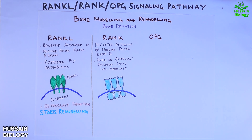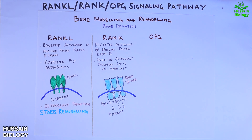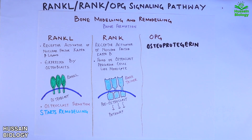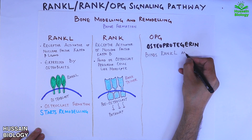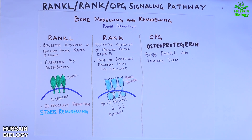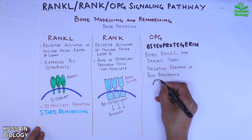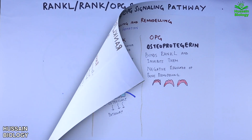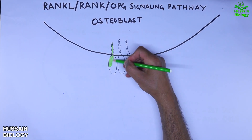In this diagram we can see the RANK trimer of pre-osteoclasts. The pathway starts when the RANKL ligand binds with the RANK trimer. We also have OPG — osteoprotegerin — a protein that binds RANKL and inhibits its activity, making it the negative regulator of bone remodeling.